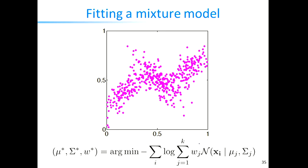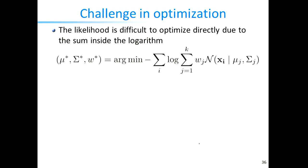In contrast to maximum likelihood estimation for a simple Gaussian, Bernoulli, or categorical distribution, fitting a Gaussian mixture is significantly more complex — there's no closed-form solution, and the optimization problem presents challenges we will discuss next.